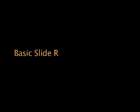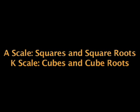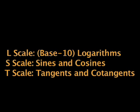The slide rule contains a number of scales which are useful for performing calculations. There's the C and D scales, which are used for multiplication and division, and also as general purpose scales. The A scale for squares and square roots, the K scale for cubes and cube roots, and then on the back side of the slide rule, you have the L scale for base ten logarithms, and the S and T scales for sines, cosines, and tangents.